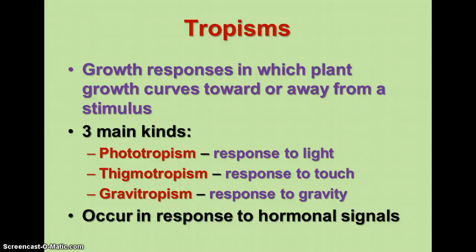The three main kinds of tropisms are: phototropism, which is a response to light; thigmotropism, which is a response to touch; and gravitropism, which is a response to gravity. There are also other related responses such as nastic movements and photoperiodism.